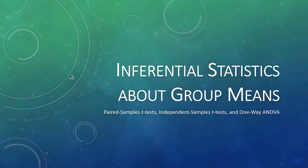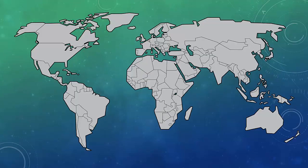In this video, we're going to talk about inferential statistics about group means. Let's imagine for a moment that I'm in dietetics, and I am under the opinion that folks in the Mediterranean have a healthier diet than folks in the U.S.